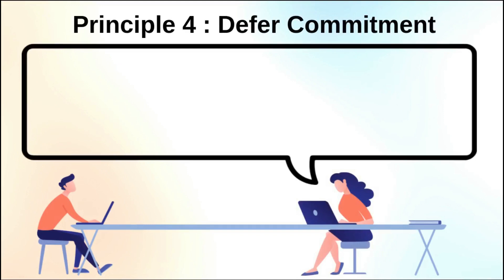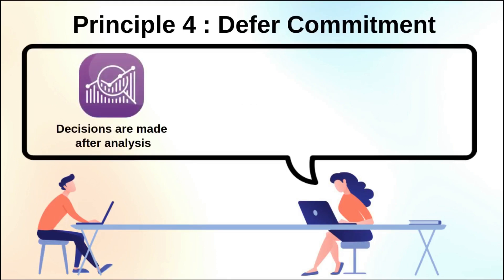The fourth principle is deferring commitment, which is about making sure that decisions are made at the right time after analysis and considerations have been made. Delaying decisions can be a valuable exercise because it allows you the time to gather more information before committing to something. This is not intended to contradict what was said earlier — both types of decision making are important.